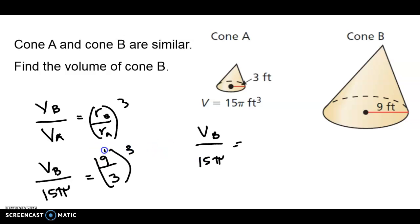You have to cube this by the way. So 9 divided by 3 is just 3, and then 3 cubed is 27. So to find the volume of cone B, you multiply 27 by 15π. So if you round that off to the nearest tenth, the answer must be 1,271.7 cubic feet.